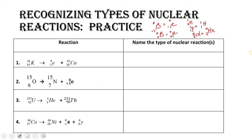Let's take a look at number one. We have potassium-42, and we end up with something and calcium-42. We notice that this particle is in the products, and if we remember our particles, this one has a negative charge, so this is beta decay. The word 'decay' helps us know that this particle is a product.